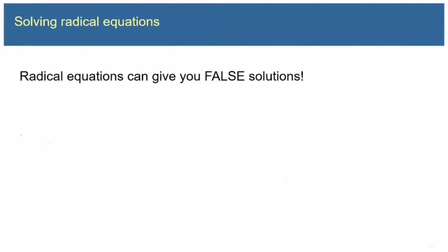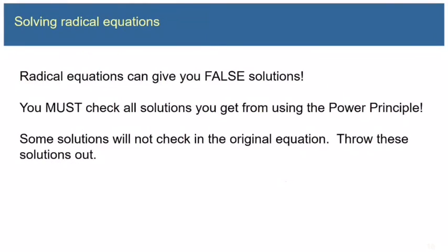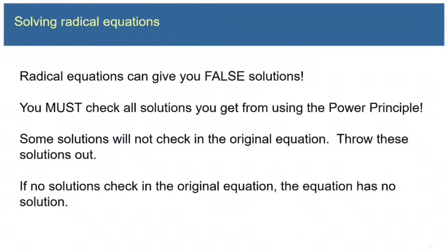So radical equations can give you false solutions. You must check all solutions you get from using the power principle. Some solutions will not check in the original equation — just throw those out. And if no solution checks in the original equation, the equation has no solution. I wish I could tell you that the smaller one or the negative one won't check, but it doesn't work like that. They both could check, they both could not check, so you really do just have to check each individual solution.